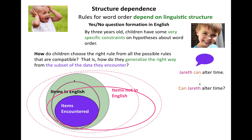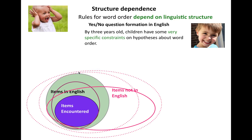How do they get to the green circle from the subset of the data that they encounter, and avoid stuff out here? How do they do that? That's your poverty of the stimulus. That's your induction problem.